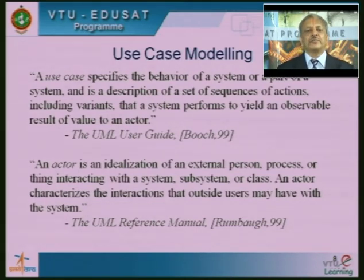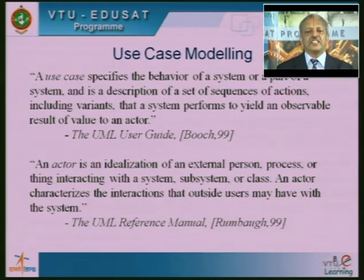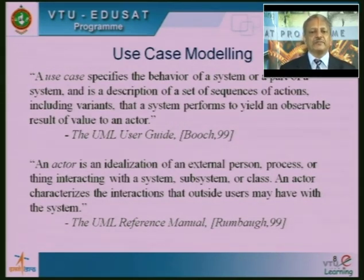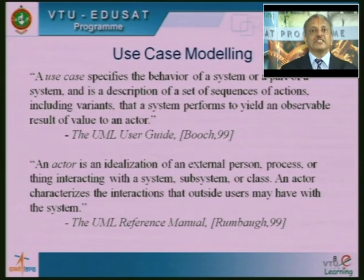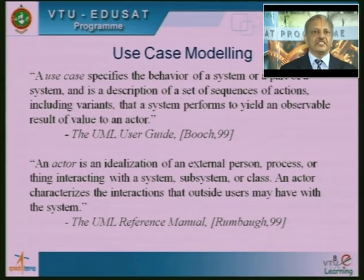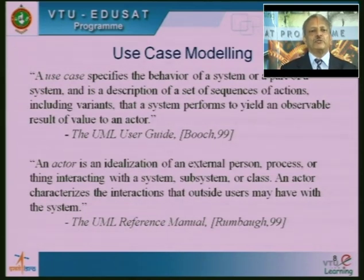Another definition is from the UML reference manual. An actor is an idealization of an external person, process, or thing interacting with a system, subsystem, or class. An actor characterizes the interactions that outside users may have with the system. With this definition, we will go forward to see how a use case is represented with examples.